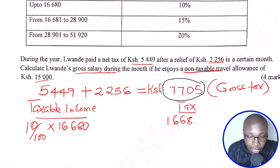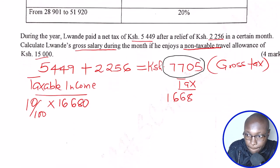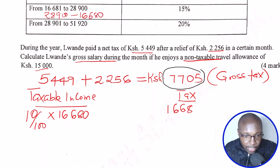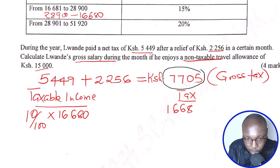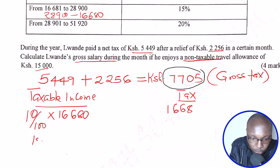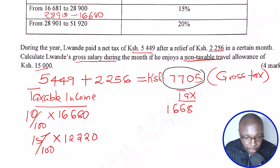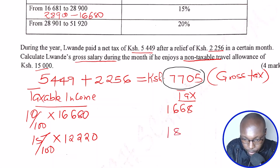We've already got 1,668, so we need to go to the next band. For the next band, we need to get the amount in this band: 28,900 minus 16,680 gives 12,220 in the second band. That is at 15%, so 15% of 12,220 — that is, 15 multiplied by 12,220 divided by 100 — gives 1,833.